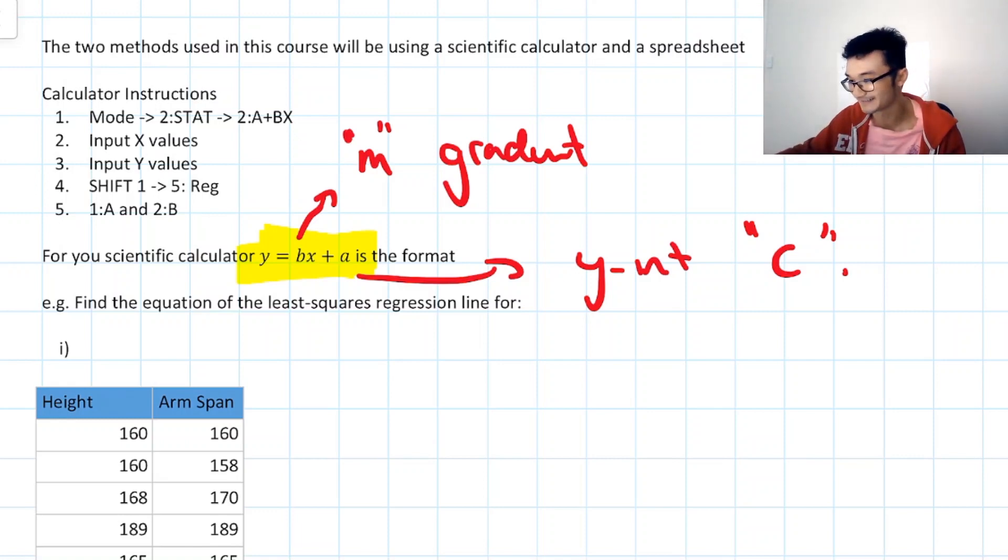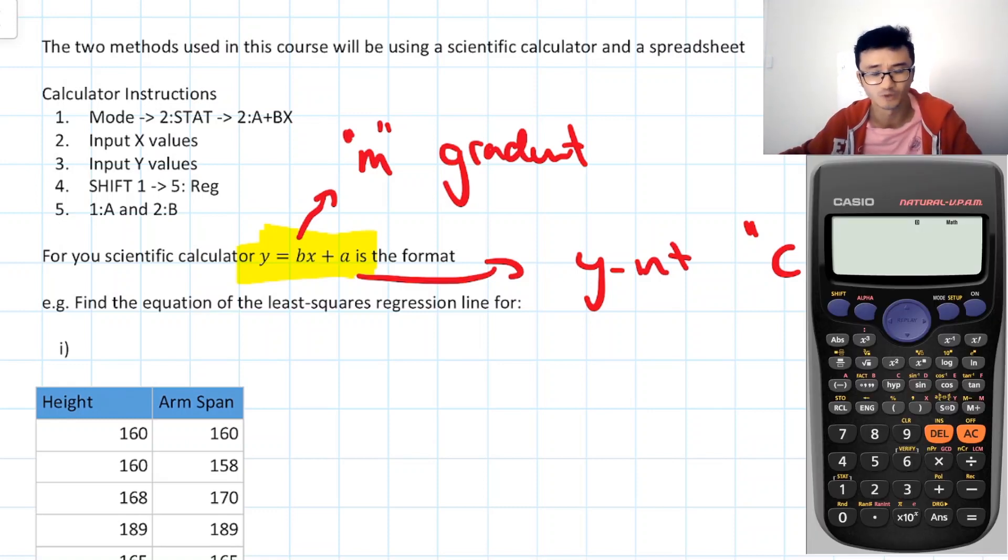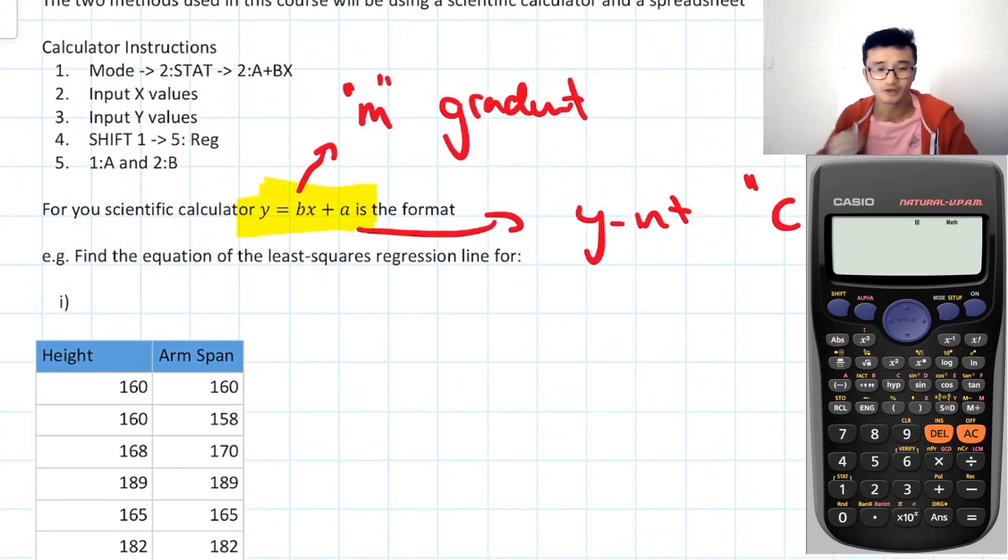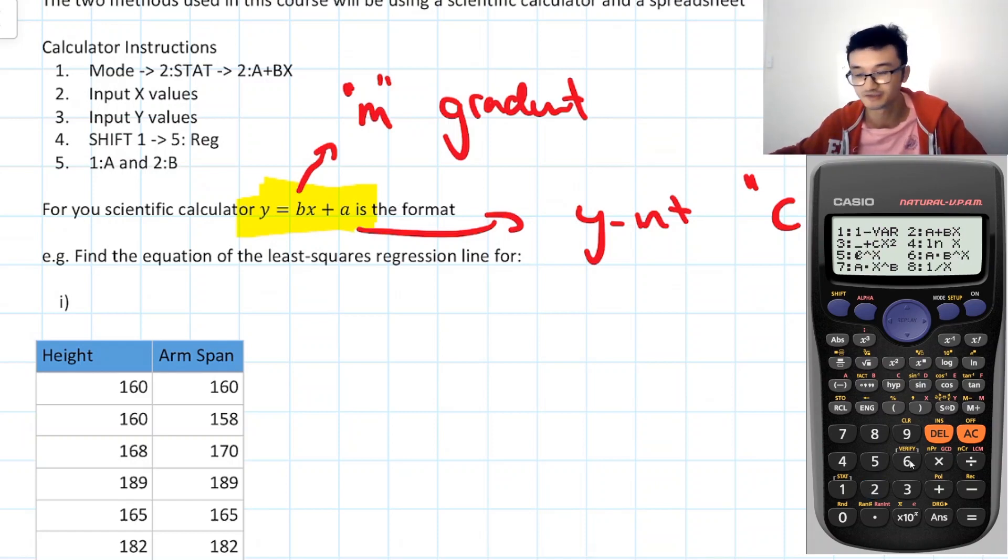So let's go ahead and calculate these. Now I've gone to the limit of getting some values that we calculated in class with our heights and armspans, and we know there should be a general correlation between that, where we have our heights and armspans being pretty similar, right? So what I'm going to do is I'm going to go through these methods here together. So firstly we put our mode and then press 2 stat and we want the A plus Bx, so that's 2 over here, and then we get these two columns. I'm going to put my x and y values, so that's my heights and armspans. So 160, we'll just go ahead and put all these numbers in.